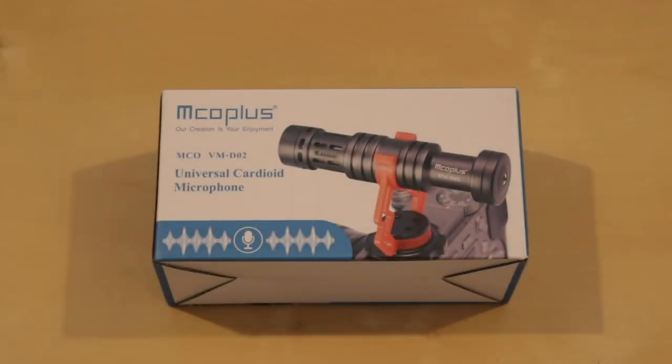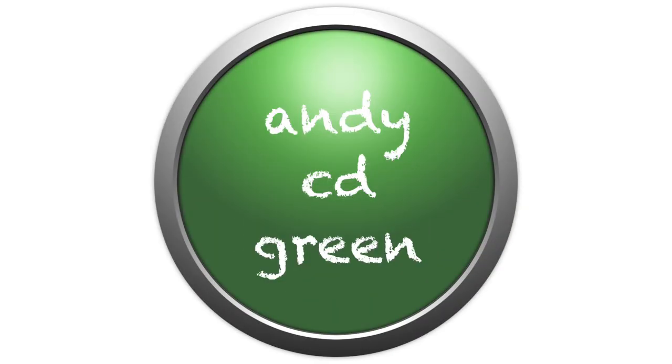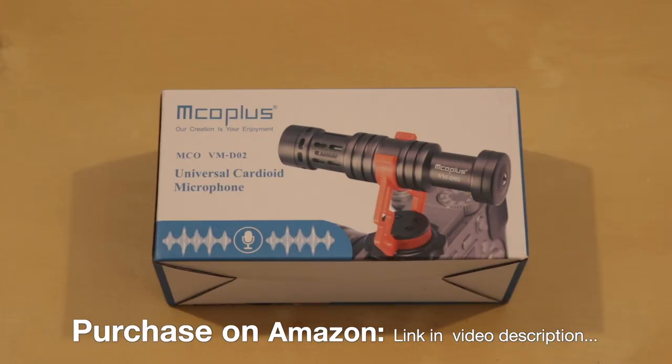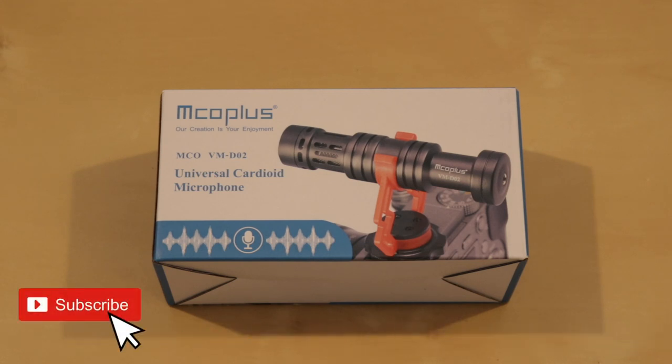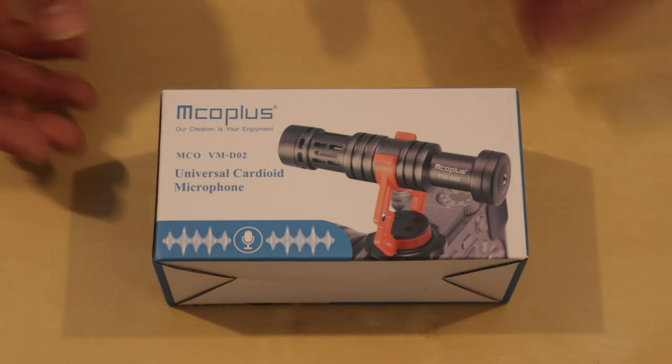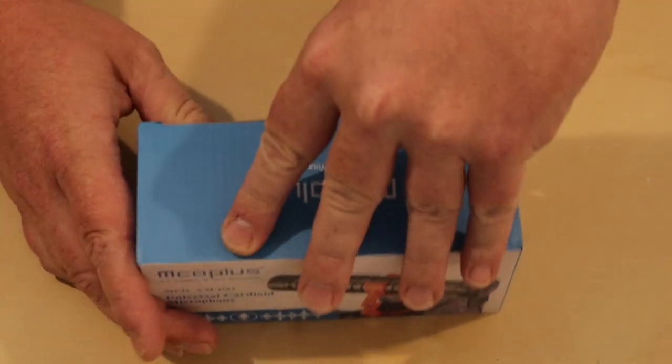Hi YouTube, today we're going to have a look at the Universal Cardioid microphone from Emco Plus. As we can see from the packaging, this is a relatively small microphone designed just to pop on top of your DSLR camera. This is a non-powered microphone, the actual model number for this is VM-D02, and there's not much more to say about it, so let's just open up the box and see what we have inside.